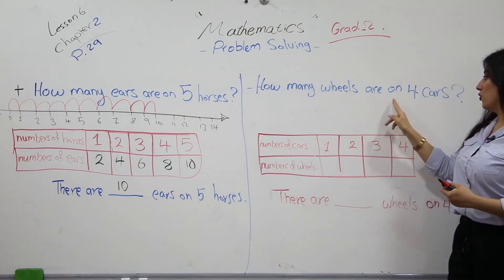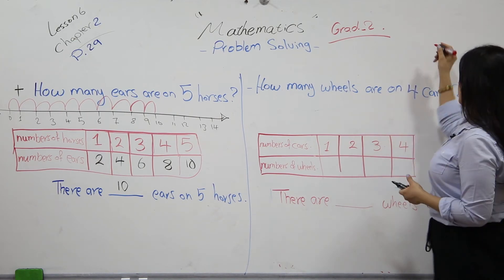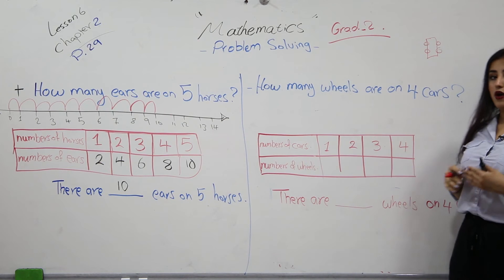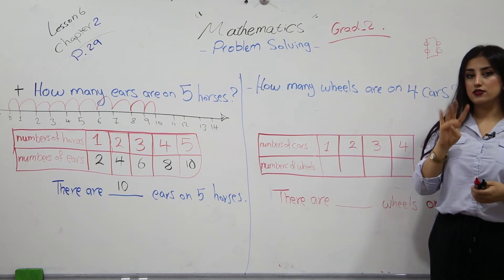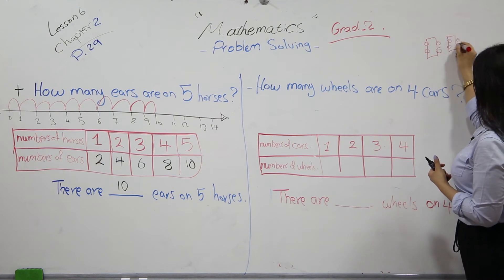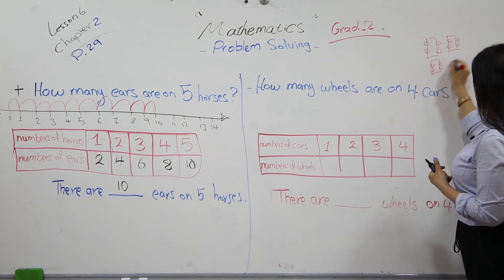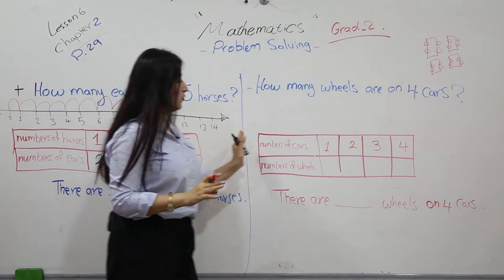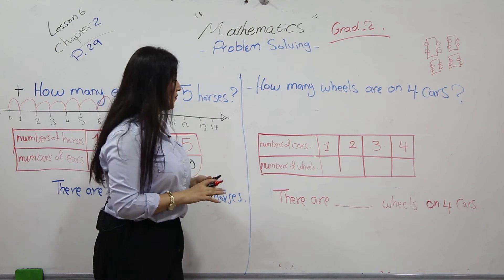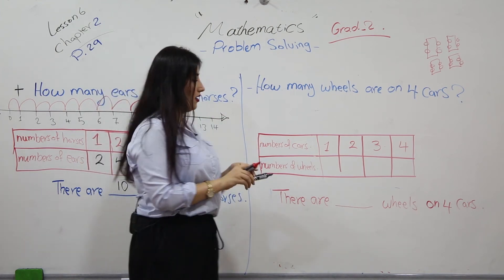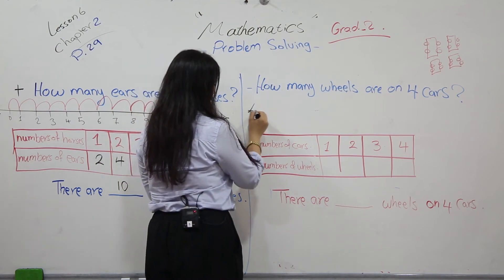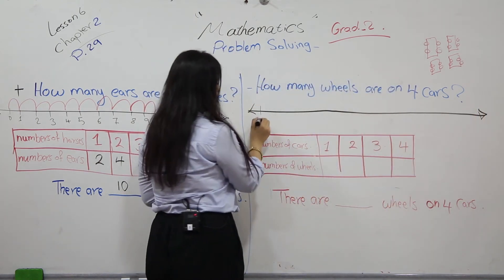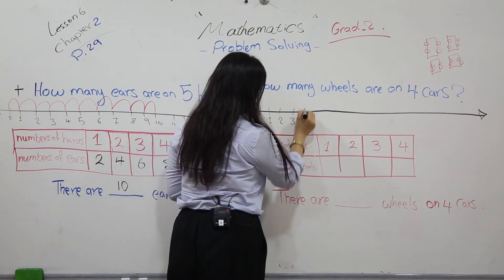Now let's have another example: how many wheels are on four cars? One car has four wheels. What about four cars? As we did in the previous example, we make a table to save information and we make a number line. We start writing numbers from zero: 0, 1, 2, 3, 4, 5, 6, 7, 8, 9, 10, 11, 12...